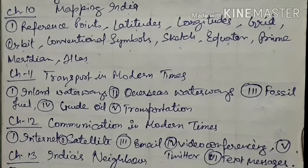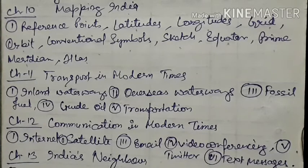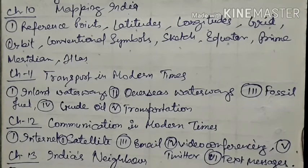Next we will start chapter number eleven — transport in modern times — meaning how the transport system changed from olden times to modern times. After chapter eleven, we will see the first value-based important question, then the activity work which we will revise. One or two activities will be made and submitted. Thanks to all of you.